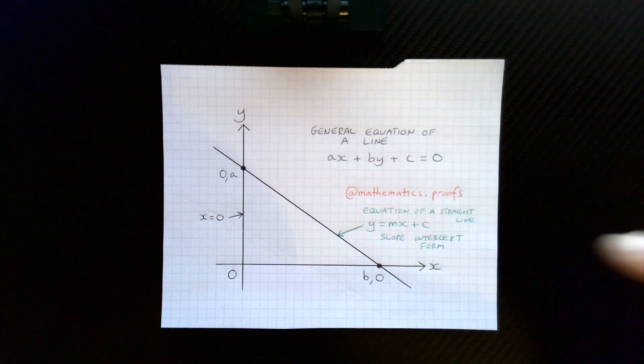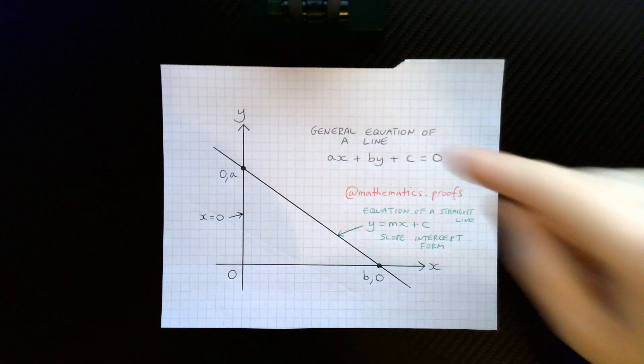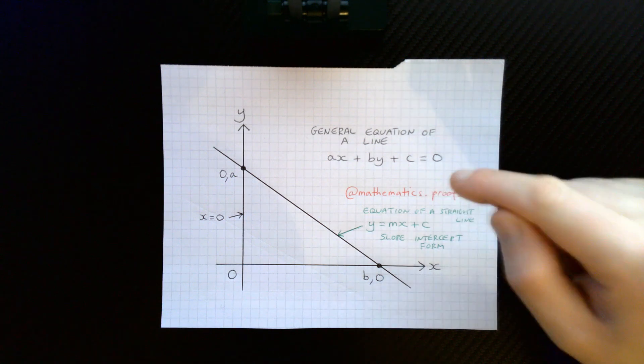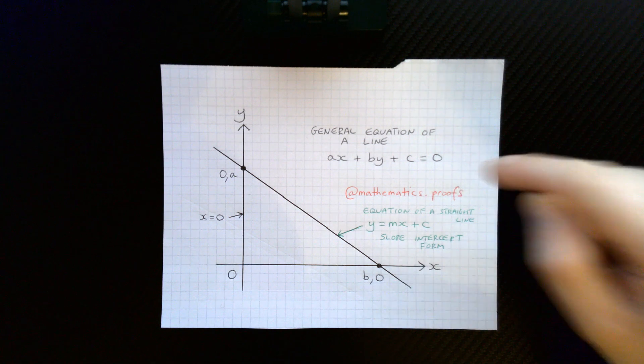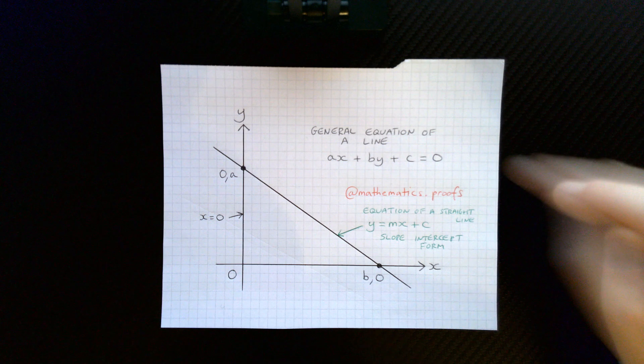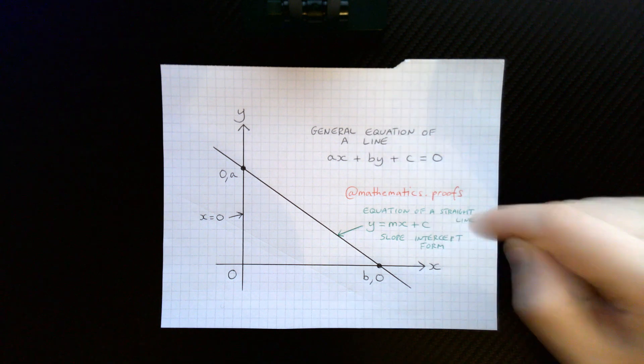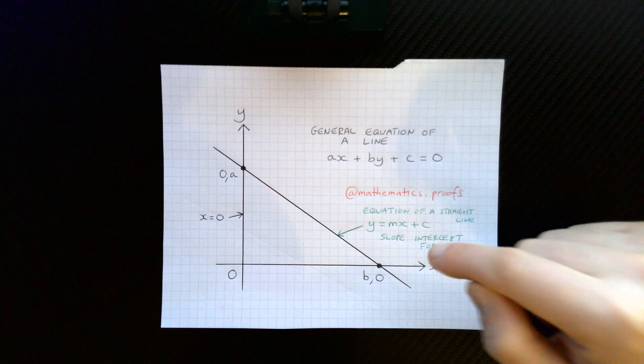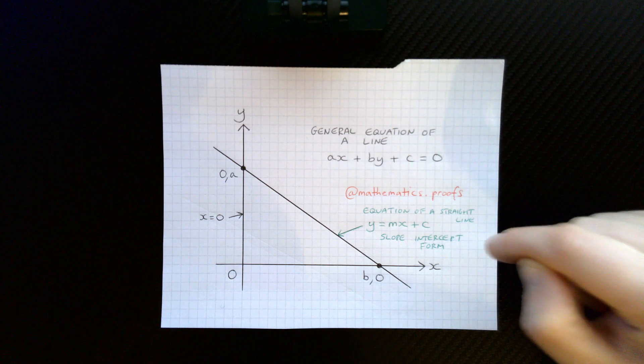Hi, in this video I'm going to be showing you how to derive the general equation of a line, that is ax plus by plus c equals zero, through the equation of a straight line of the slope intercept form y equals mx plus c.